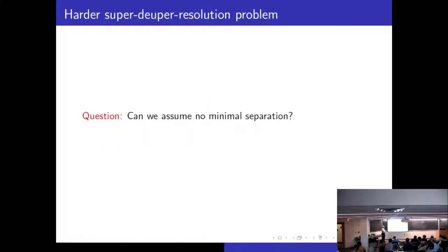So we want to do a harder super-duper resolution problem. And the question is then can we assume no minimal separation? So now we don't want to assume that the μ_j's are separated by some distance. Please remember that in the machine learning problems the classes are not always well separated. It's not a reasonable assumption to say that μ_j's are well separated. So can we do it without it?